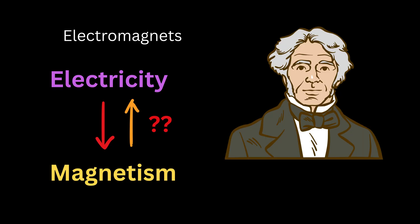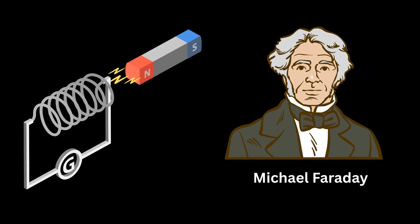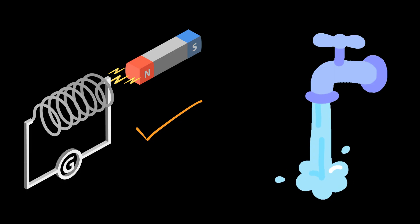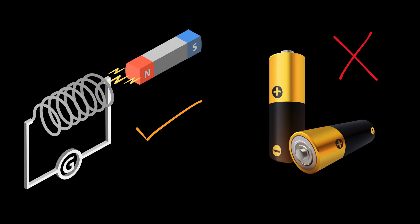That question fascinated a young scientist named Michael Faraday. He became determined to find out whether magnetism could be used to create electricity, because if that happened, then it would mean that we could generate electricity endlessly without relying on batteries and without needing chemicals.